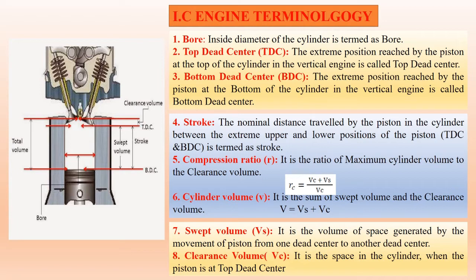Next is the compression ratio. Before that, we need to understand clearance volume, swept volume, and total volume. Clearance volume is the gap between the cylinder head and piston head when the piston is at TDC. Swept volume is the total volume minus the clearance volume — it exists between TDC and BDC. The compression ratio is total volume divided by clearance volume.